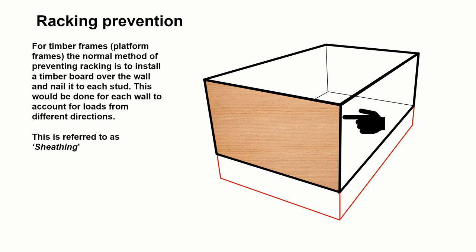For timber frames, platform frames, the normal method to prevent racking is to install a rigid timber board, so plywood or OSB, over the face of the timbers. And they would be nailed to the structural members, the studs, and this would help prevent racking. So we refer to this boarding as sheathing.